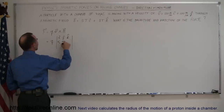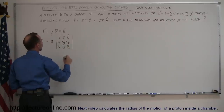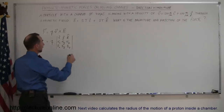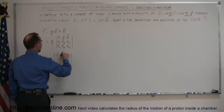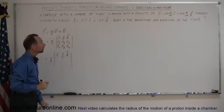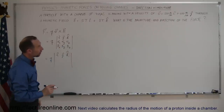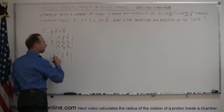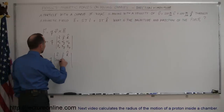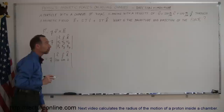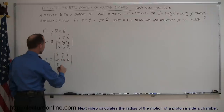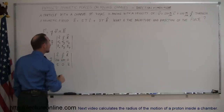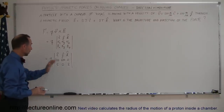The matrix rows are: V in the x direction, V in the y direction, V in the z direction, and B in the x direction, B in the y direction, and B in the z direction. Plugging in the values: x direction is 200 meters per second, y direction is 600, and z direction is 0. For the magnetic field: 5 teslas in the x direction, 0 teslas in the y direction, and 8 teslas in the z direction. Now we're ready to solve this matrix.